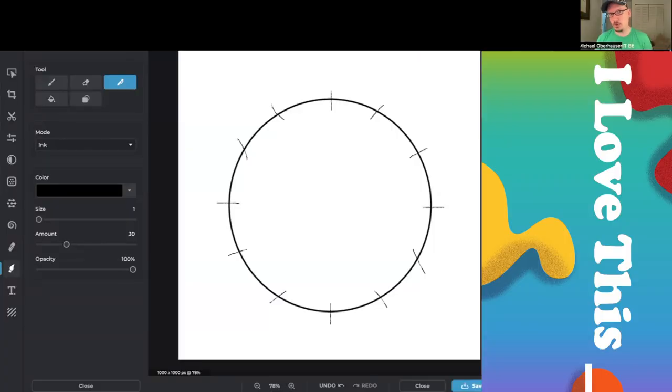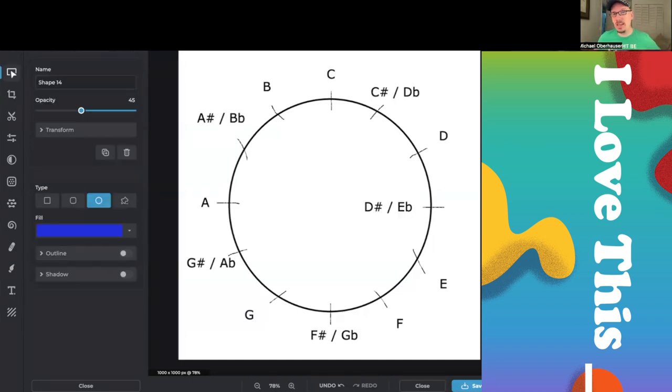So we're used to seeing a circle divided into 12, not only like on a clock face in our usual life, but in music we're used to seeing this as a circle of fifths. We're going to treat this slightly differently than a circle of fifths. We're just going to be looking at this as all of the pitches in chromatic order around a circle.